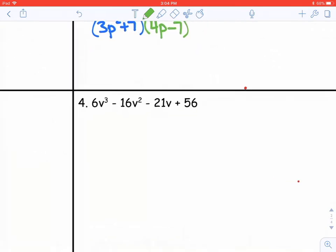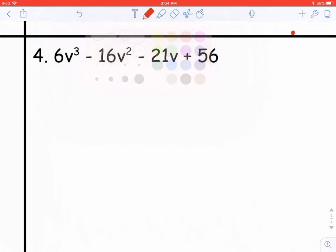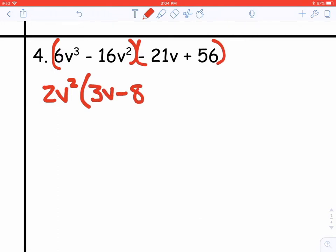All right, we have one more good example to look at. So number four, we have 6v cubed minus 16v squared minus 21v plus 56. So let's group the first two and the last two. Out of 6v cubed minus 16v squared, we could take out 2v squared and we would have 3v minus 8 left over. Remember to take out the sign at the beginning of that second group. And then take out between 21v and 56, the largest number they have in common is 7.